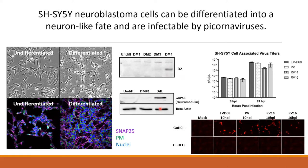We also find neuronal-specific markers like the dopamine receptor and neuromodulin are expressed only after differentiation, so we're satisfied these cells are adopting a neuron-like fate. We also found they're very infectable by multiple picornaviruses — EVD68, polio, and a couple of rhinoviruses. Over 24 hours we get two to three log increases in viral titer, and we can confirm RNA replication using an antibody against double-stranded RNA replication complexes.